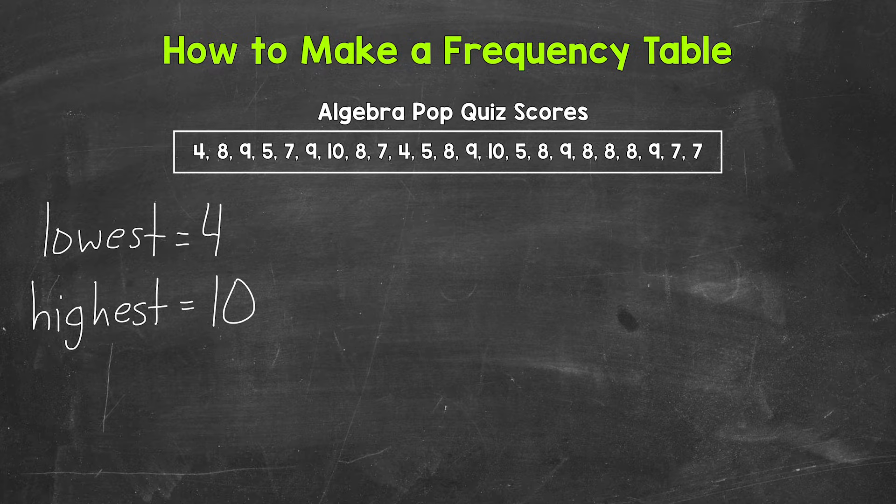Now that we know where to start and end our table, we can make our table. Now for this data, we do not have a very wide range or too many individual values, meaning we are only going from four to 10. So we're going to list each individual value here for our table.